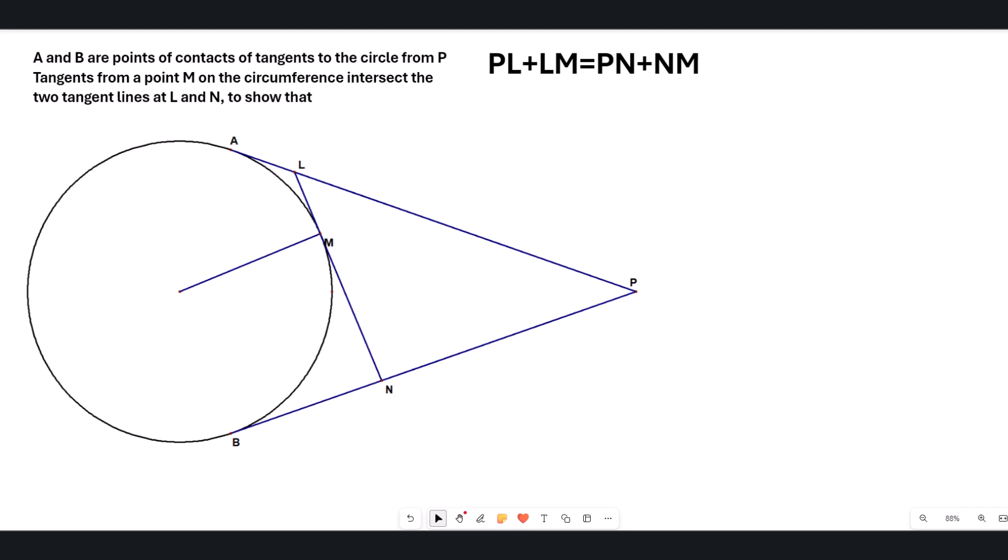So let us quickly summarize our discussion. We had PA and PB as tangent lines from this point P, and then we took a point M on this circle.